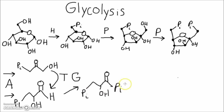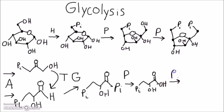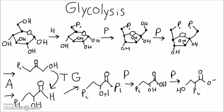Phosphoglycerate kinase converts 1,3-bisphosphoglycerate into 3-phosphoglycerate. Then phosphoglyceromutase converts it into 2-phosphoglycerate — the phosphate group has moved from the left to the middle. Nothing has really changed chemically; those groups just switched places.